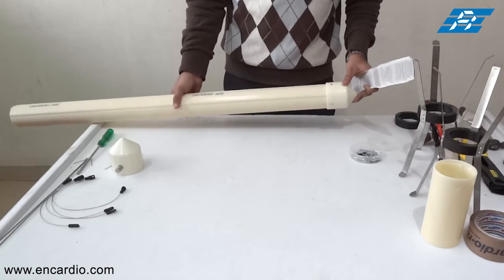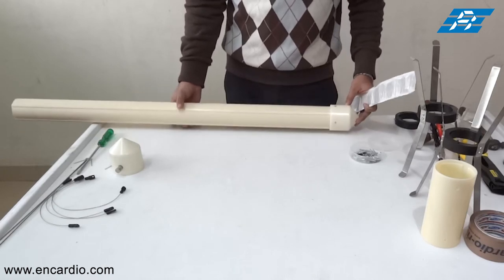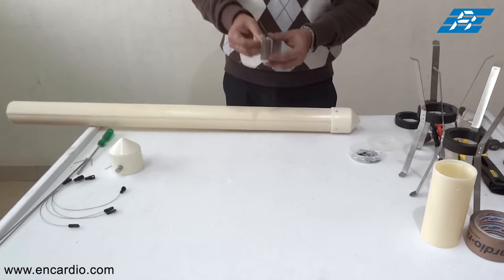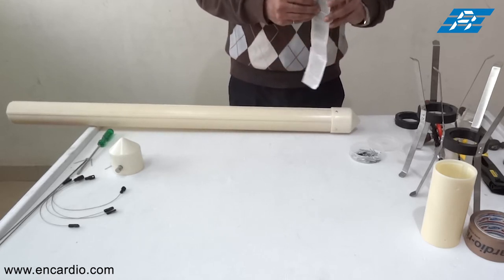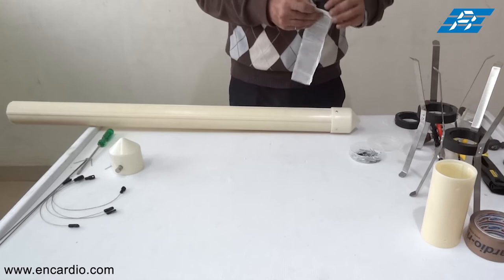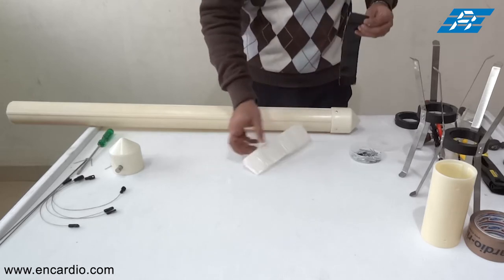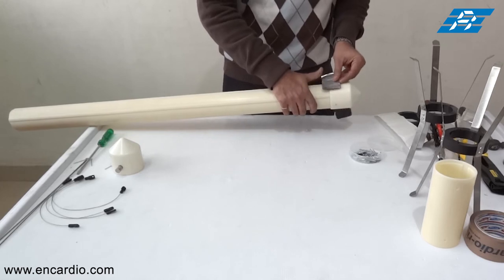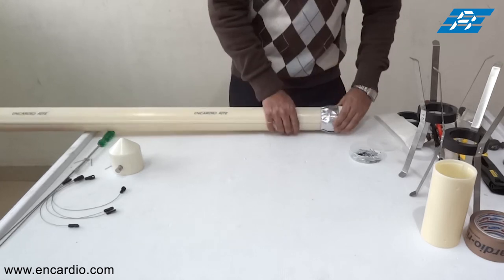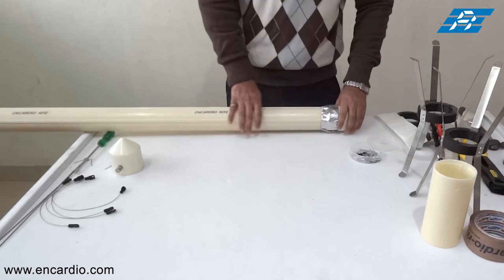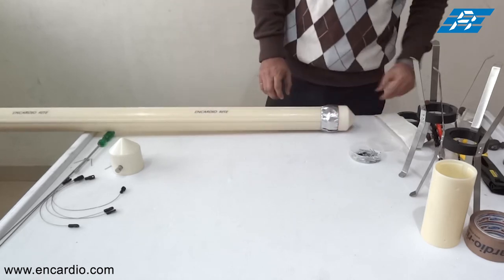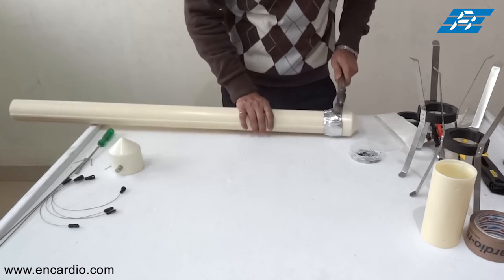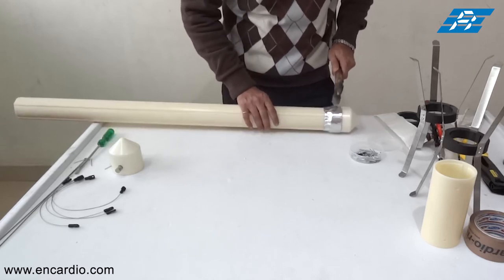After fixing the bottom cap, it needs to be sealed around by a mastic tape. We have cut the mastic tape of the size of the bottom cap and we will wrap it around and tap it with the hammer so that there would not be any space left.